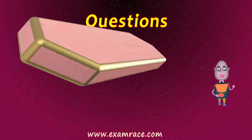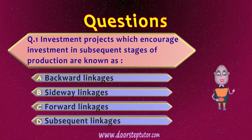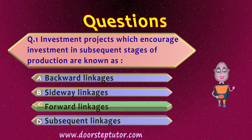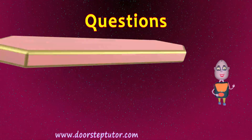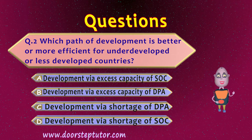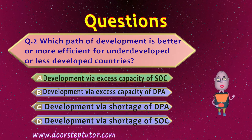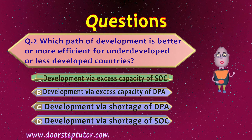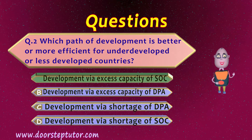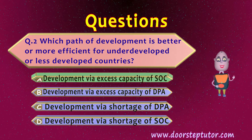Question 1: Investment projects which encourage investment in subsequent stages of production are known as — the correct answer is option C: forward linkages. Question 2: Which path of development is better or more efficient for underdeveloped countries? The correct answer is development via excess capacity of Social Overhead Capital, because as we saw in the diagram, this path is more smooth and hence more efficient.